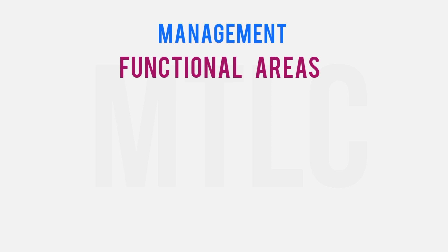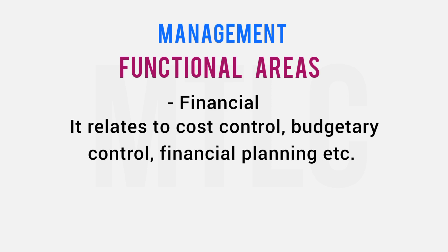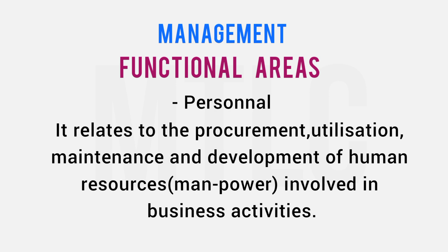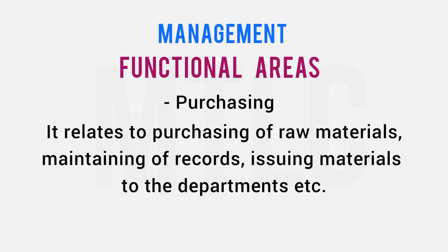In the functional areas of management: Financial management covers cost control, budget control, and financial planning. Personal management deals with procuring raw material and how to maintain manpower. Purchasing management covers how to maintain purchase records, how to issue a purchase, and how to check stock.